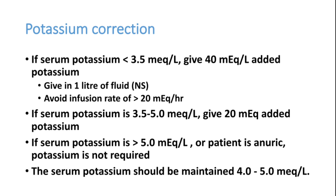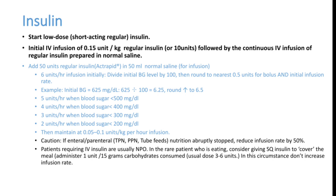Potassium correction protocol: if serum potassium is less than 3.5 mEq/L, add 40 mEq/L potassium to 1 liter of normal saline, with infusion rate not exceeding 20 mEq/hour. If serum potassium is 3.5–5 mEq/L, add 20 mEq potassium. If serum potassium is more than 5 mEq/L or the patient is anuric, potassium is not required. Maintain serum potassium in the range of 4–5 mEq/L, because insulin itself can further drop potassium.